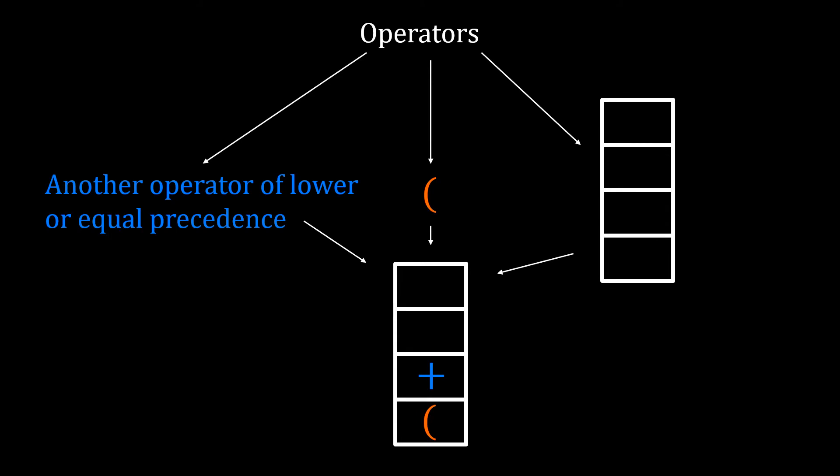If we have an operator, we're going to want to pop from the stack until seeing one of three possible stopping conditions: another operator of lower or equal precedence — for example, if the operator under consideration is a plus, we'd pop until we saw a plus or minus; an opening bracket; or if the stack is completely empty.